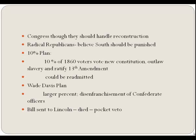In 1860, nobody could vote except a few wealthy white men in the South. The radicals in Congress wanted a stronger plan called the Wade-Davis Bill. This required a much larger percentage of voters and disenfranchised many Confederate officers, as well as repudiating the Confederate debt. It was sent to the president, and he kept it in his pocket—and then he was assassinated. That's where we get the term 'pocket veto.'